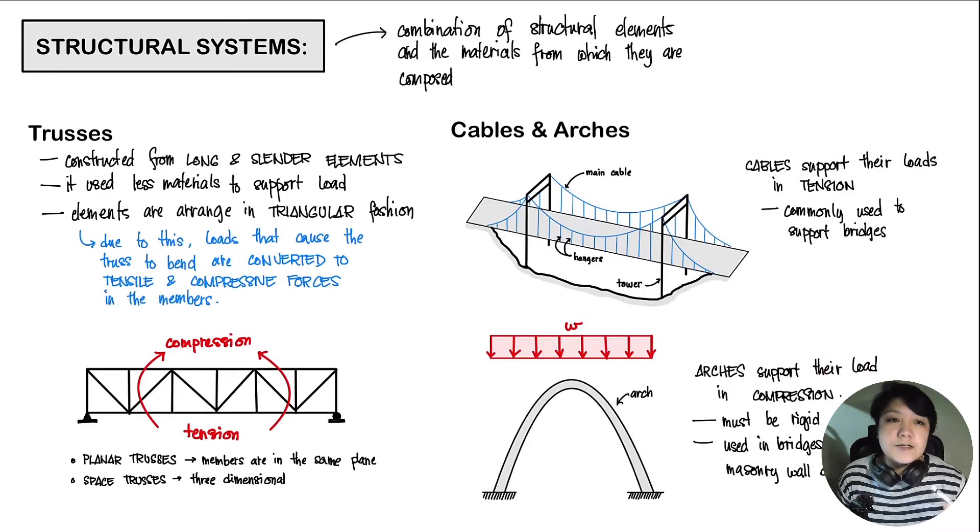On to our different structural systems. Your structural system is just a combination of your structural elements and the materials from which they are composed. The first one is our trusses. Your trusses are constructed from long and slender elements. They use less materials to support your loads. The elements are arranged in a triangular fashion. Due to this arrangement, the loads that cause the truss to bend are converted into tensile and compressive forces in our members. If you remember your statics of rigid bodies, where we did some truss analyses, you'd know that each member is either subjected to a tensile or compressive force, if it's not a zero force member.